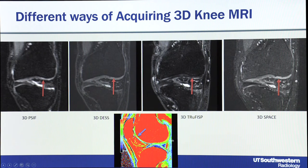Here is a case where you have a small area of osteochondral malacia — this red spot. If you try to look for it on different 3D sequences it's hard to see on all of them except the 3D SPACE, where you can see a blister in the deeper layer of the cartilage — that white bubble — so it's easier to see on this sequence.